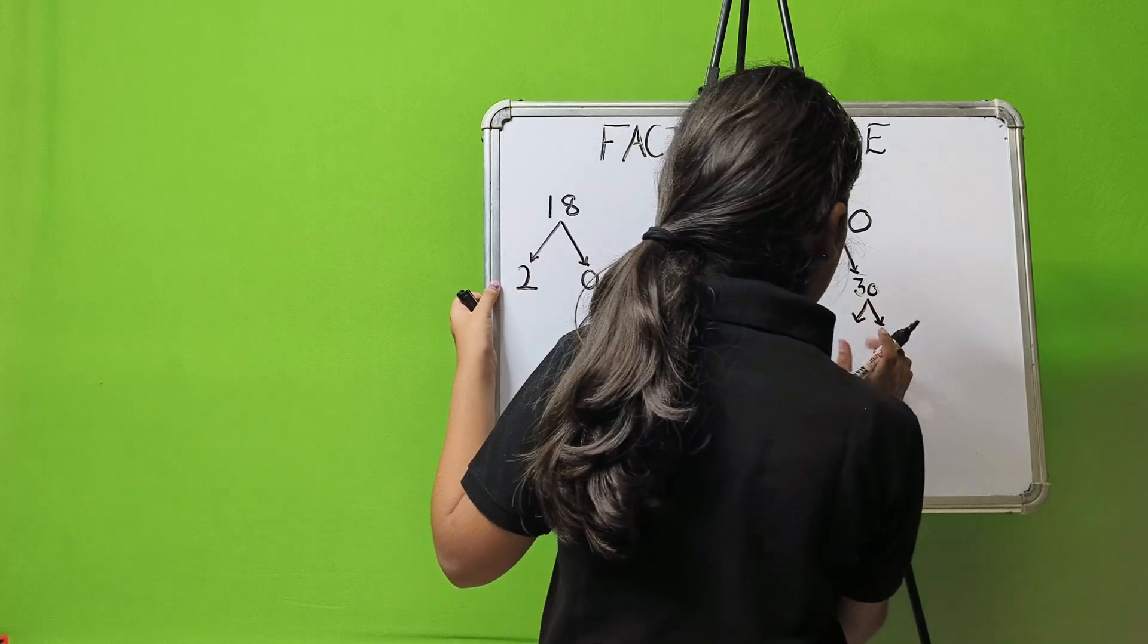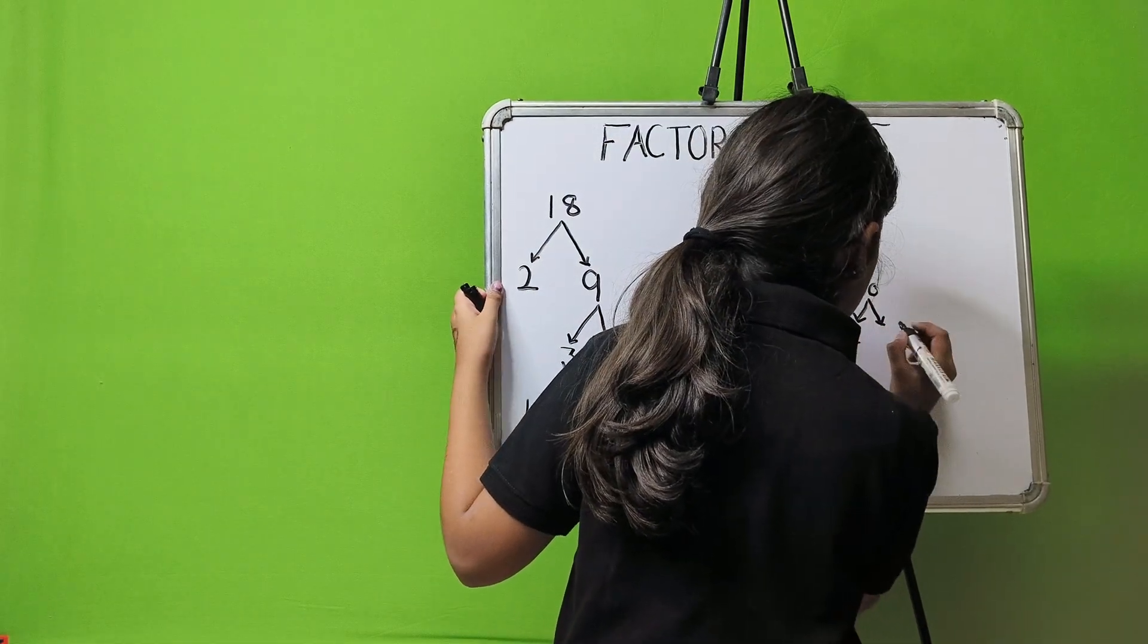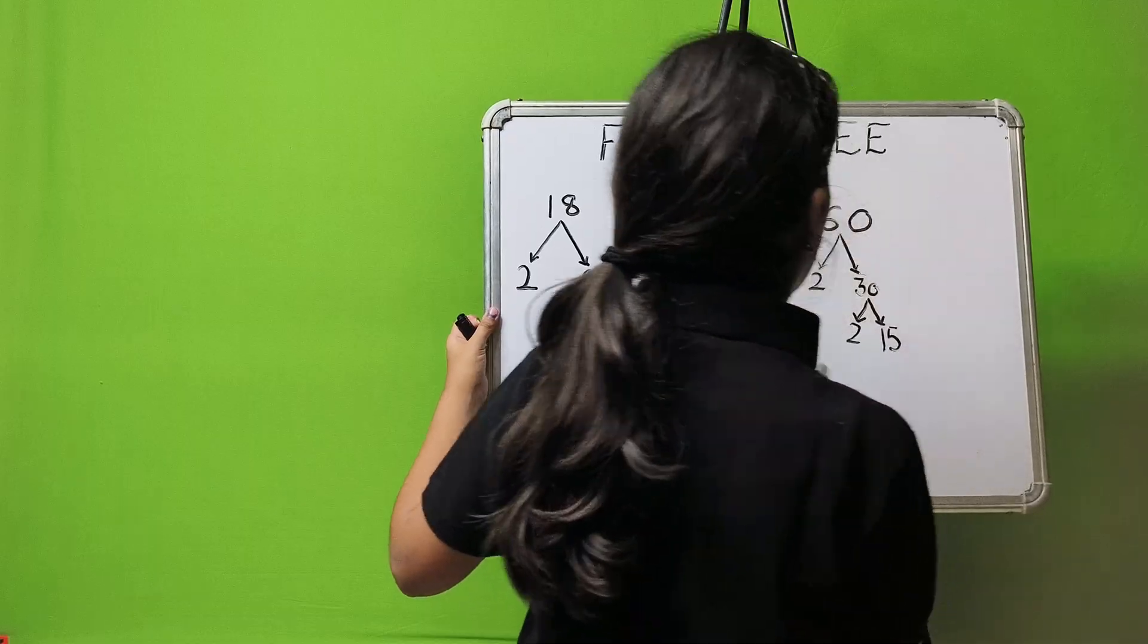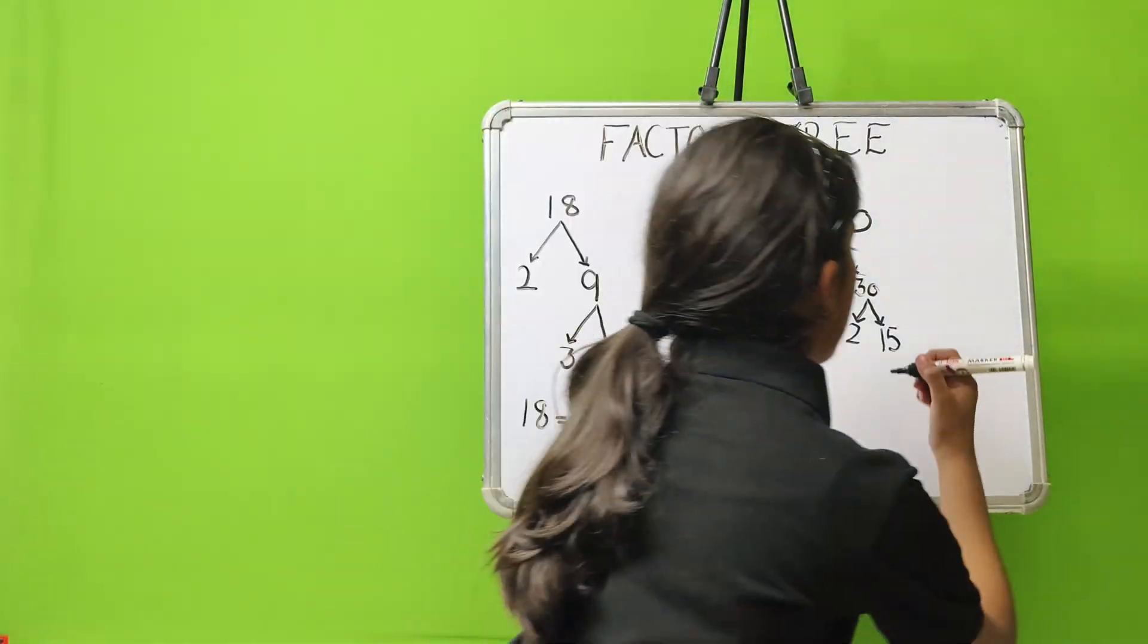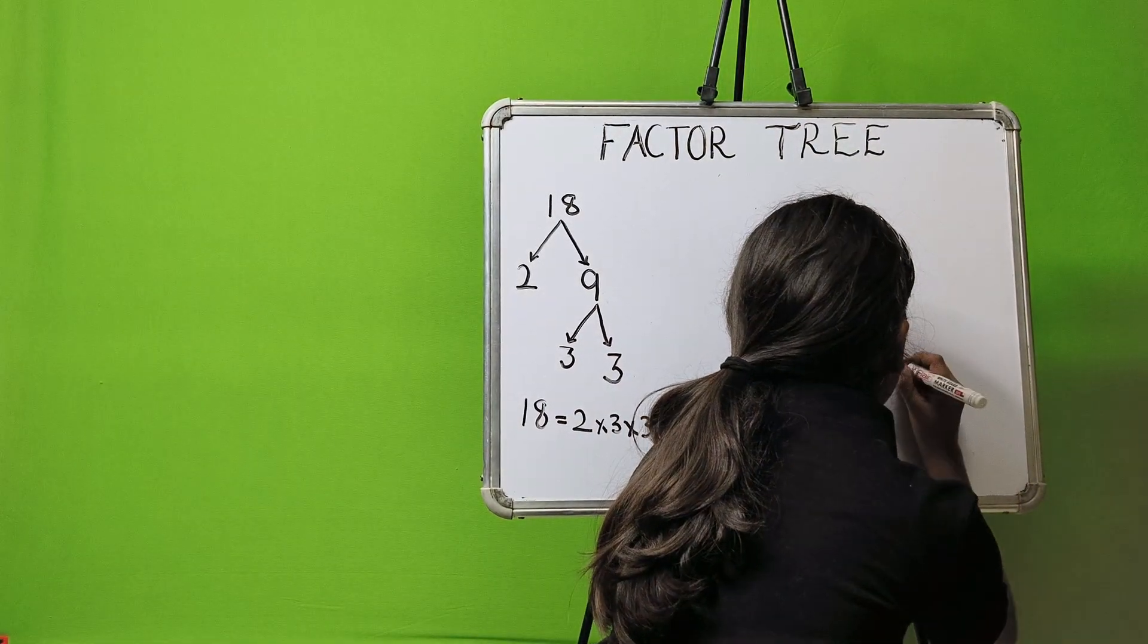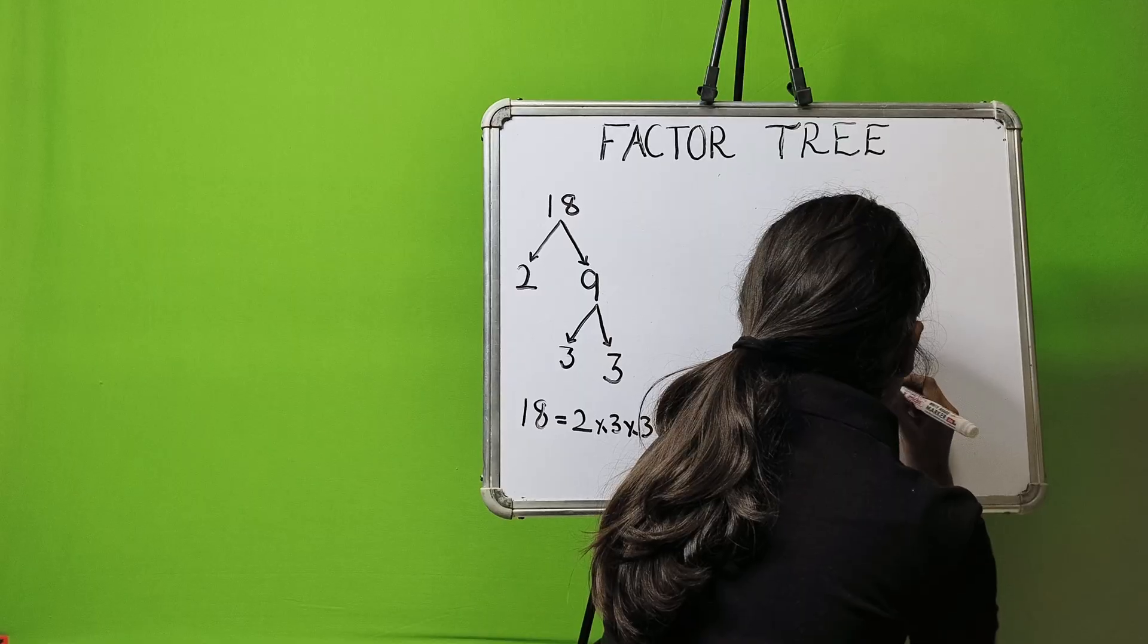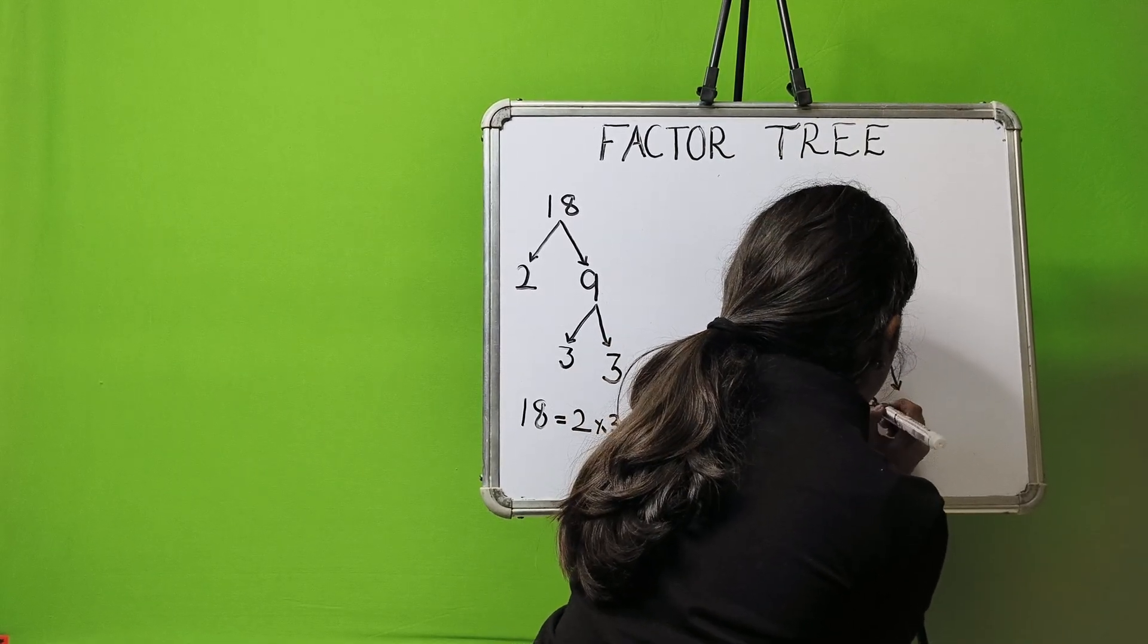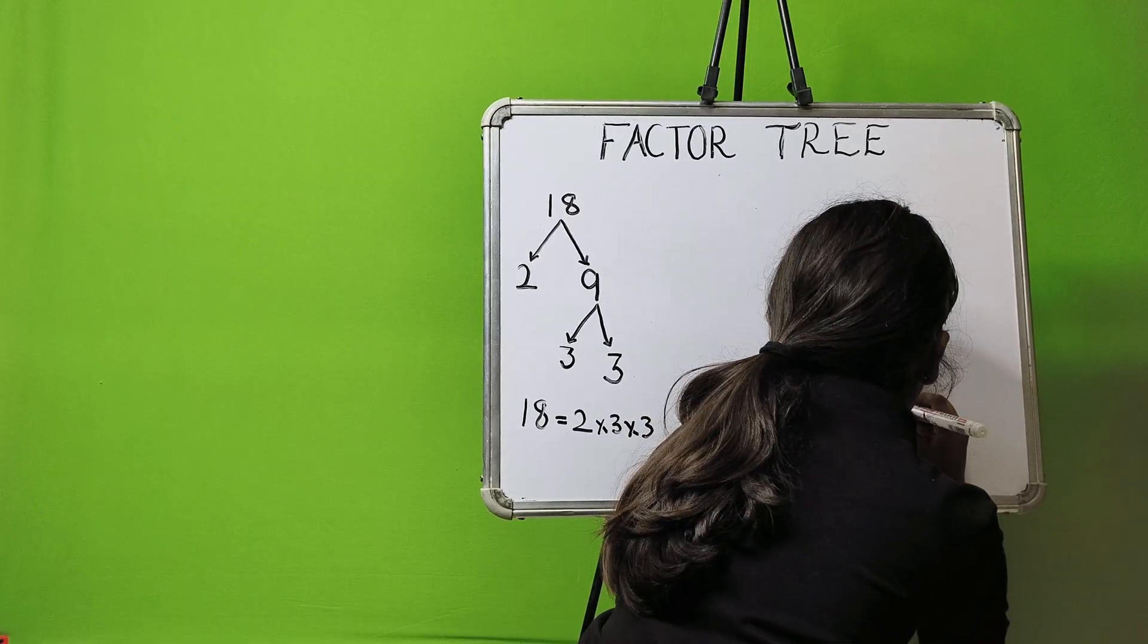Here I am writing 2 and 15. Now, 15 is a composite number, so I am going to break 15. Now, here I am writing 3 and 5.